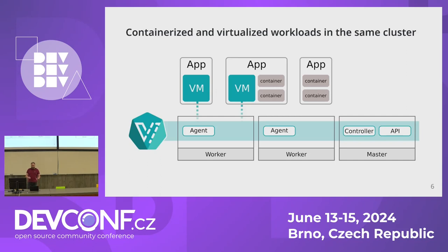At a very high level, this is the high-level diagram on the website. We have agents across all the worker nodes, our own controllers, and we provide our own aggregated API. One of the ultimate goals is to allow users to run virtualized workloads — be that legacy, something they're transitioning, or workloads that simply need to be virtualized — alongside traditional containerized Kubernetes workloads.